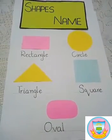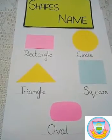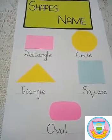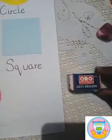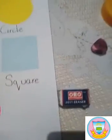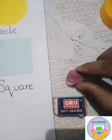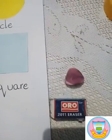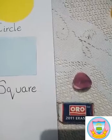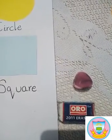I have this eraser and its shape is rectangle. I have this razor and its shape is triangle — it has three sides. And this razor has four sides.